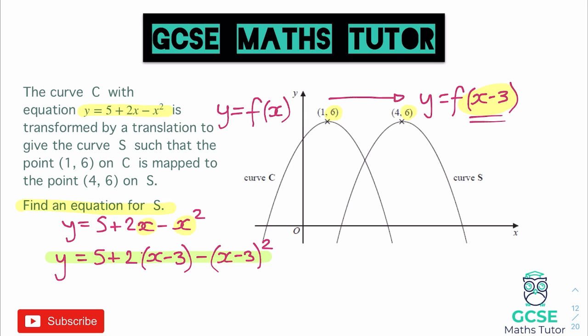But let's imagine the question asks you to put your answer in a certain form — say y equals ax minus b minus cx squared. So we have to actually expand and simplify all of these pieces. We just need to be very careful, particularly with the negatives involved. Expanding the bracket gives 2x, and 2 times negative 3 is minus 6. Then we expand the double bracket (x minus 3) squared: x times x gives x squared, x times negative 3 gives negative 3x, then negative 3x again, and negative 3 times negative 3 gives positive 9.